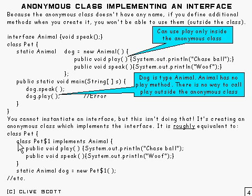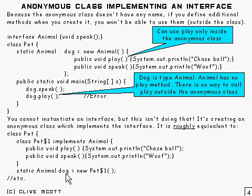Down here is roughly what it's equivalent to. We've got something called pet$1 which implements Animal — that's effectively the class that we're getting with those things in it. We're doing new pet$1 and assigning it to Animal, because it implements Animal so we can do that.